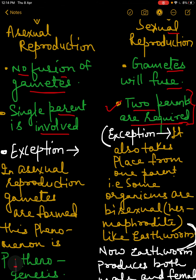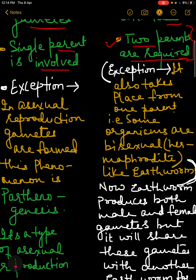But exceptions are always there. Now we are going to study about those exceptions. It also takes place from one parent — that is, some organisms are bisexual, also known as hermaphrodite.